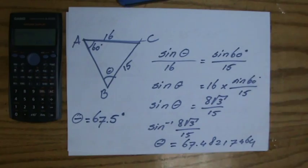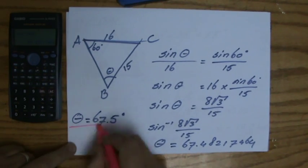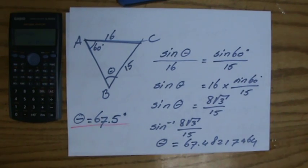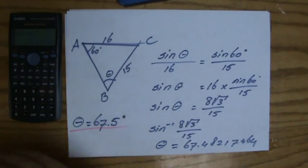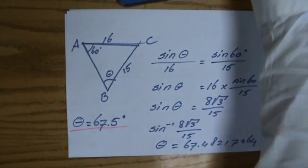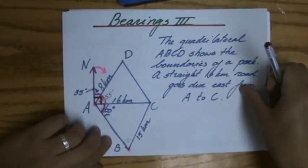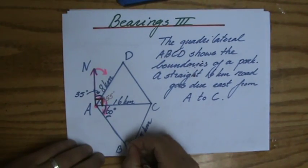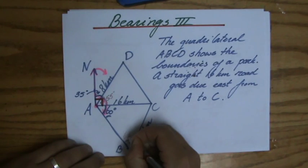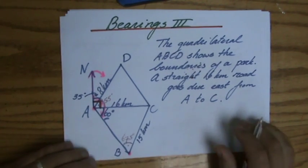67.48217464. And if I just put that down here. So that is 67.5 degrees. One decimal place for an angle. 67.5. But I wrote down all those decimals because maybe I'm still going to need that in the near future. So grabbing my drawing, 67.5 degrees.